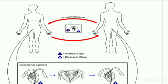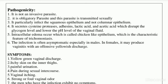Now we move on to pathogenicity. Pathogenicity is the ability of the protozoan or parasite to cause disease — it covers the sequence of events that occur after infection. The first point is that Trichomonas vaginalis is not an invasive parasite; it is an obligatory parasite and is transmitted sexually.